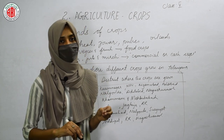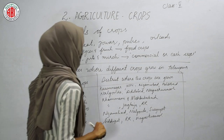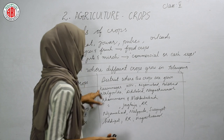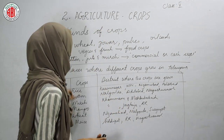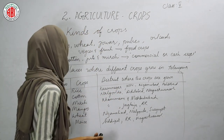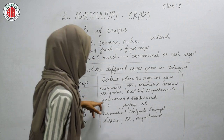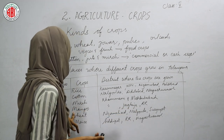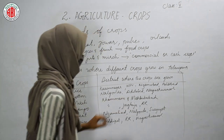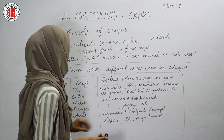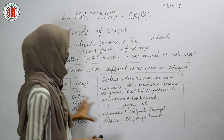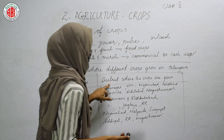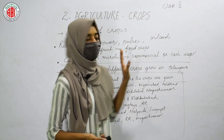The next topic is places where different crops grow in Telangana. Rice grows well in Karimnagar, Mahbubnagar, Nizamabad, and Adilabad. Cotton grows well in Nalgonda, Adilabad, and Nagarkurnool. Mirchi grows well in Khammam and Mahbubnagar. Mango trees are found in Khammam, Jagtial, and Rangareddy. Wheat grows well in Nizamabad, Nalgonda, Suryapet, Siddipet, Rangareddy, and Nagarkurnool. Maize is grown in those same districts.